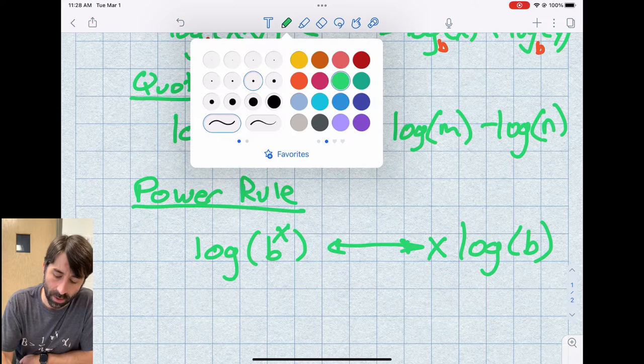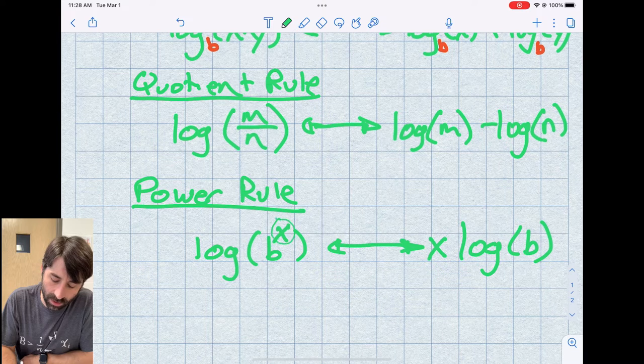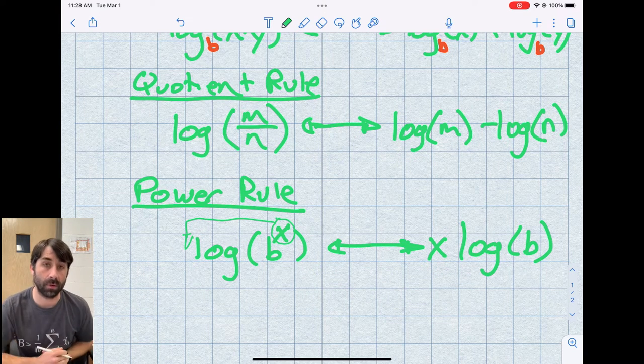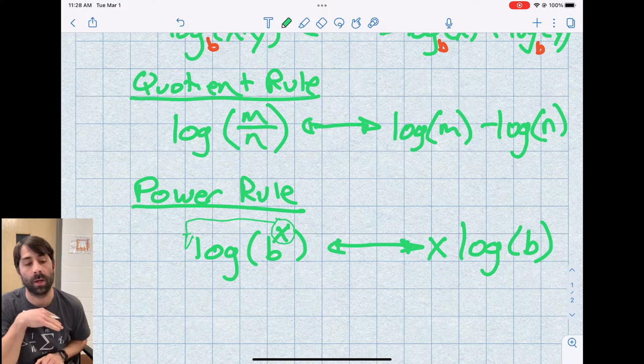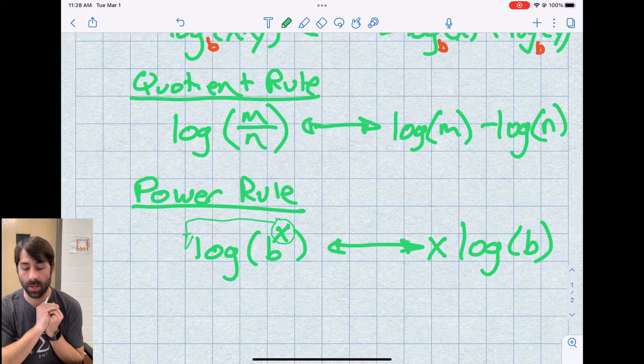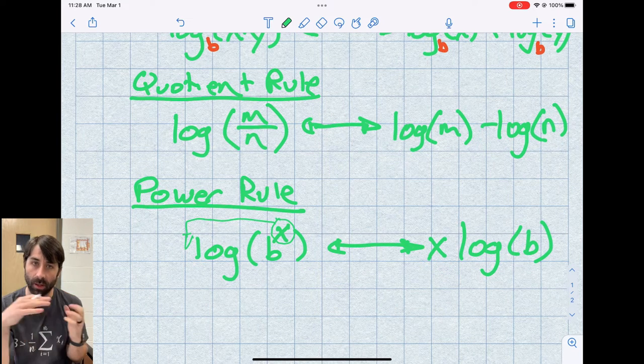If I look at it this way, it's kind of like taking this x value and bringing it out front. These are the three rules we're going to exploit when we're expanding logs and we're consolidating logs.